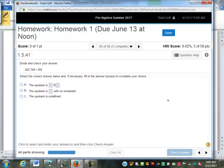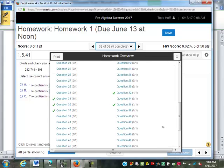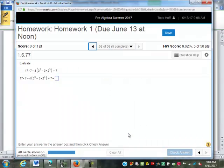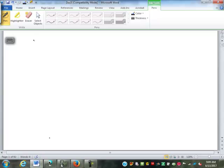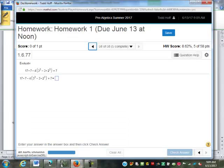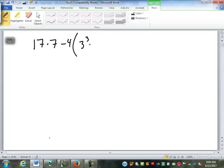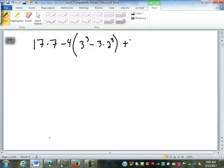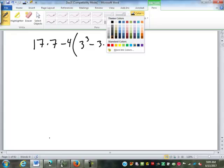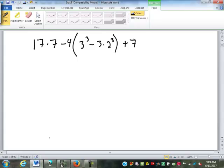Any other questions off of the homework that you want me to go over before we move on? The very last question. 58. The very last question. Oh, that was a fun one. No, it wasn't. Apparently we have different ideas of fun. So 17 times 7 minus 4 times quantity 3 to the 3rd minus 3 times 2 to the 3rd plus 7. Now, again, the numbers you had are probably different than mine because the computer randomly generates it. But remember, we have our order of operations.